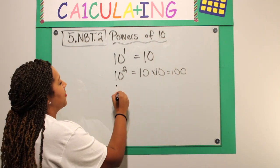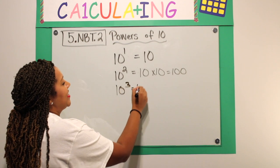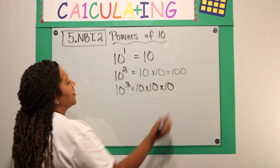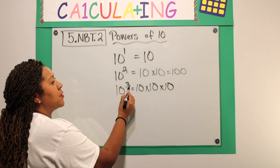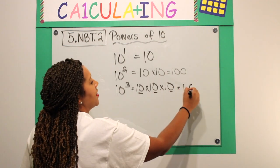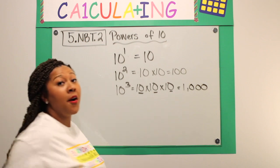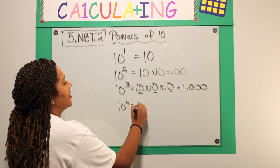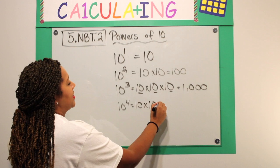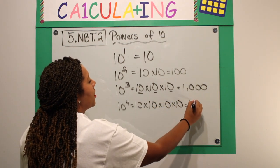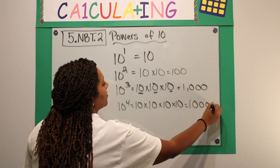10 to the third power is 10 times 10 times 10. I have three groups of 10, which gives me three zeros. And the number with three zeros is 1000. 10 to the fourth power is 10 times 10 times 10 times 10. And you got it. One with four zeros.